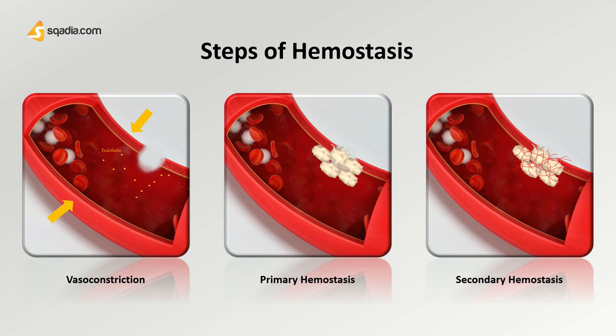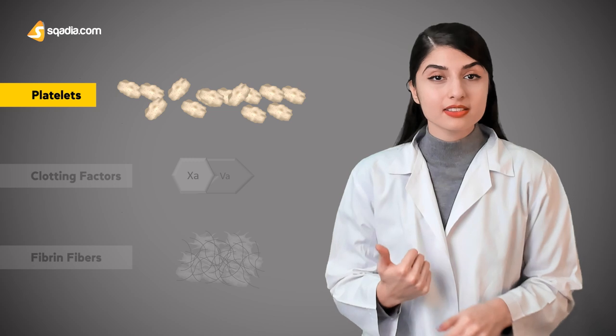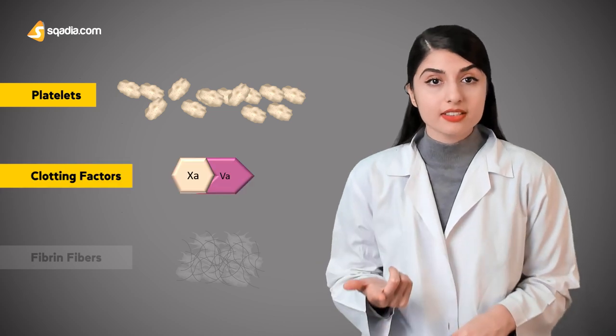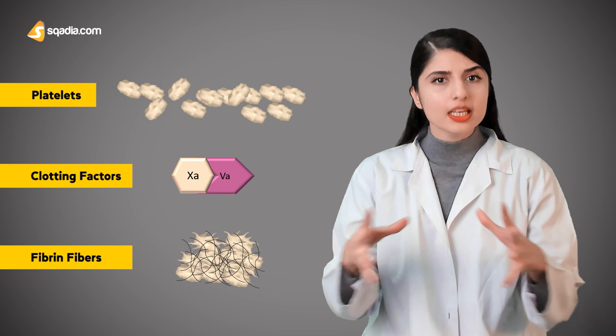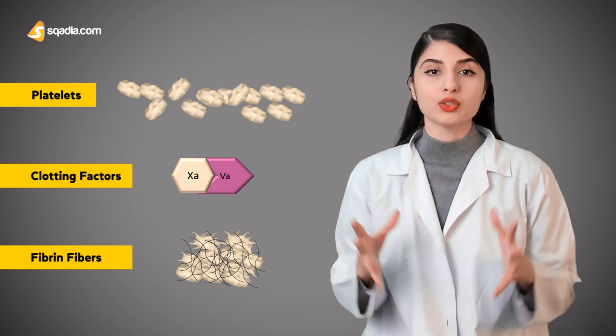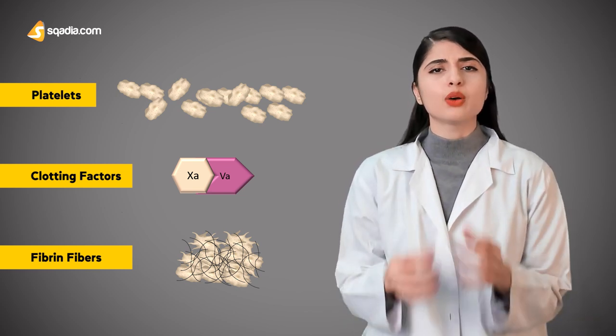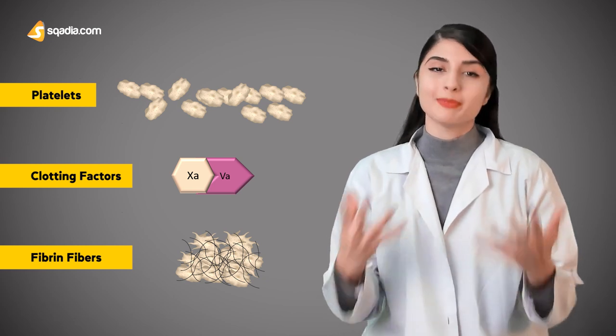These are the three main steps employed in hemostasis: vasoconstriction, primary hemostasis, and secondary hemostasis. You must keep all of these in mind. Now note the key players involved in each of these steps: the platelets, the clotting factors, and the fibrin fibers that stabilize the platelets at the site of damage. We will see how each of these are involved as our story builds.